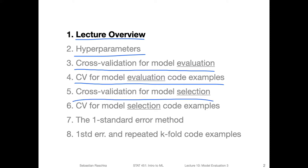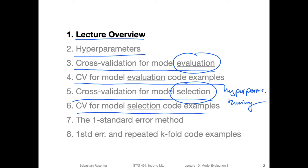Then we will talk about cross validation for model selection — note I underlined it here to highlight the difference. First, cross validation for model evaluation, then for model selection, where this is for hyperparameter tuning. I will also show code examples of how we can do that in scikit-learn using grid search and randomized search. Then we will talk about the law of parsimony, looking at the one standard error method — taking the concept behind k-fold cross validation and combining it with the idea of keeping things simple. I will also show code examples for the one standard error method, as well as repeated k-fold cross validation, which is similar to the repeated holdout method covered in last week's lectures.